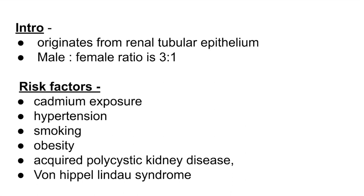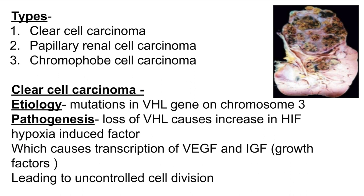There are three major types of renal cell carcinoma, along with sarcomatoid and other types. The first is clear cell carcinoma, the second is papillary cell carcinoma, and the third is chromophobe cell carcinoma. In clear cell carcinoma, mutations occur in the VHL gene — the von Hippel-Landau gene — present on chromosome 3.